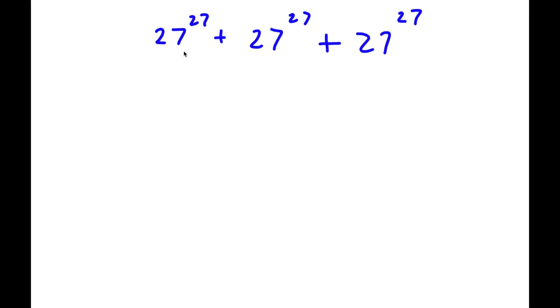Alright, so I have 27 to the power of 27, plus 27 to the power of 27, plus 27 to the power of 27. Now the first thing I'm going to do is factor out 27 to the power of 27.